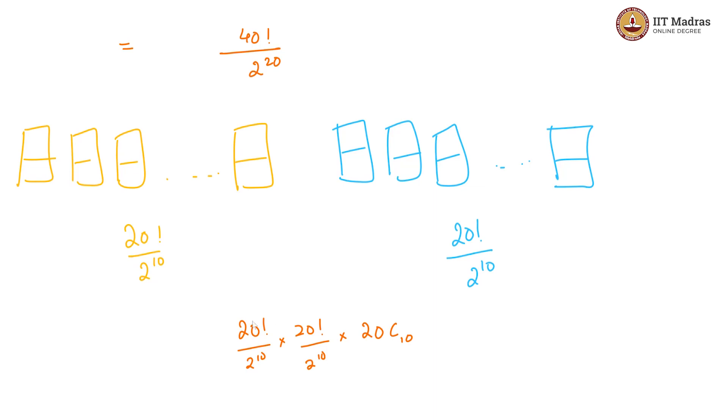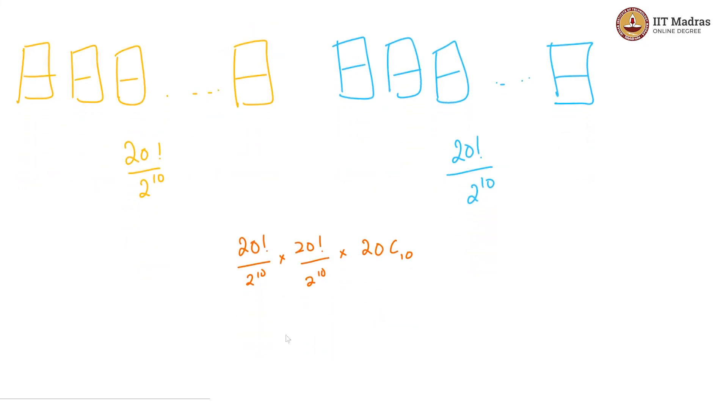After these rooms are chosen, these are the ways that they respectively get filled and then this divided by 40! / 2^20.